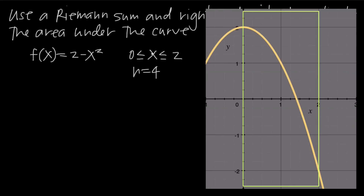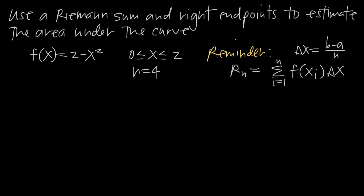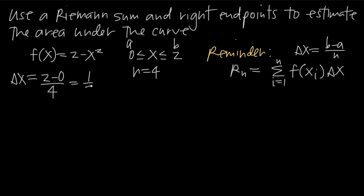After drawing the graph and defining the interval, the next step is always to find delta x. We find delta x with the formula: delta x equals b minus a divided by n. The left side of the interval is a, the right side is b, and n equals 4. So delta x equals 2 minus 0 divided by 4, which gives us 2 over 4, or 1 half.